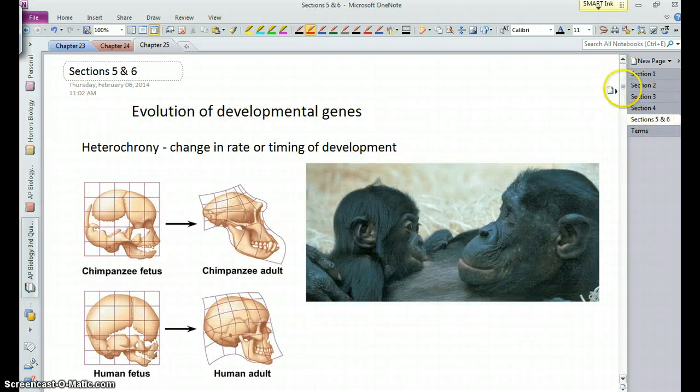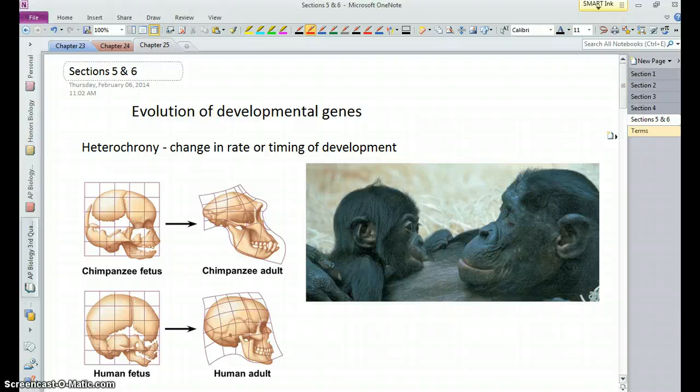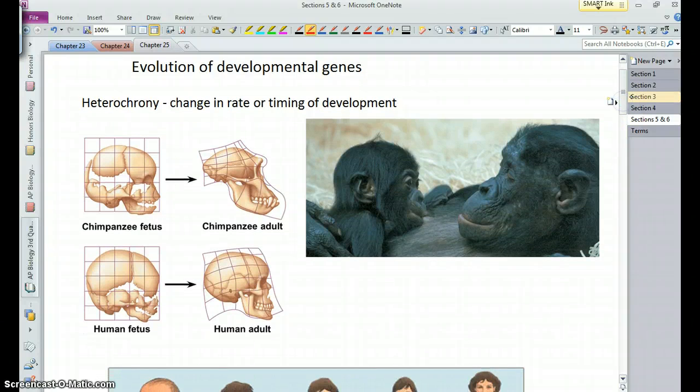Sections five and six, other things that have impacted evolution. Of course, when we look at genetics, there are genes that control development, and they have evolved over time. One phenomenon we see is what's called heterochrony, and that is changes in the timing, the rate and timing of development. So a good example is when we look at humans and chimps, we share a common ancestor and are closely related,